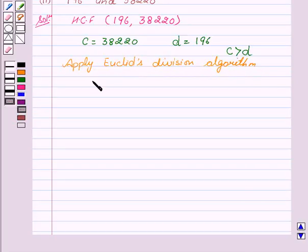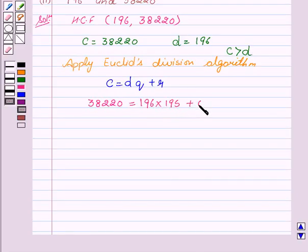From this we can say that C equals DQ plus R, where C is 38,220. On dividing 38,220 by 196, we get quotient as 195 with remainder as 0. So here we see that R equals 0. This implies that D, which is 196, is the HCF.